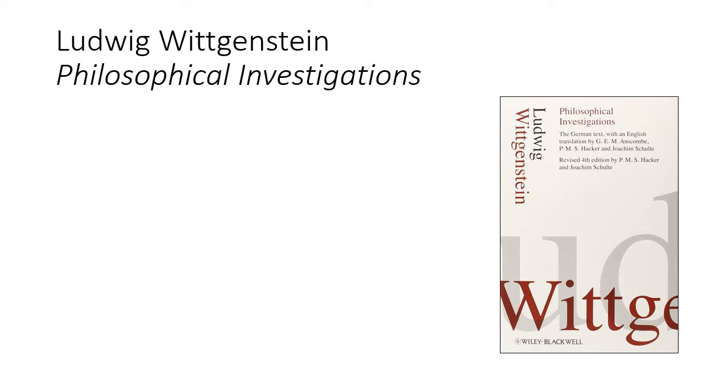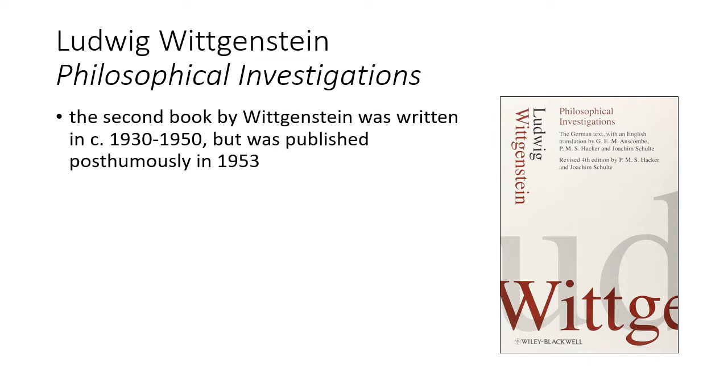Wittgenstein's second book was called Philosophical Investigations, written from the 1930s to 1950s. It was published posthumously, because Wittgenstein died in 1951 and the book saw the light of the world in 1953. The style of writing is completely different than Tractatus. Tractatus was a set of hierarchically numbered statements that were, according to Wittgenstein, self-evident.